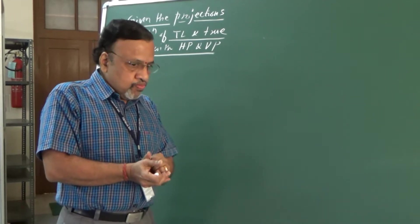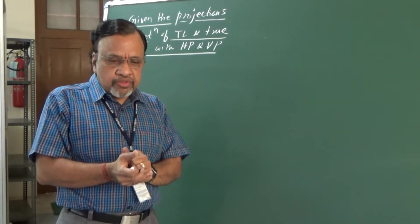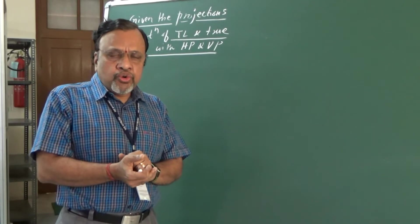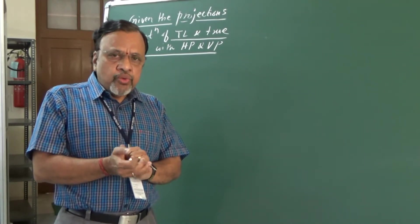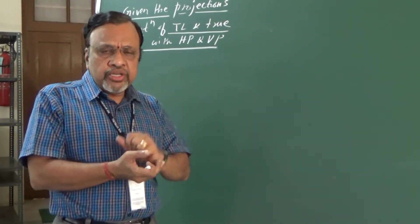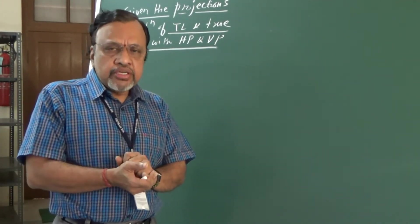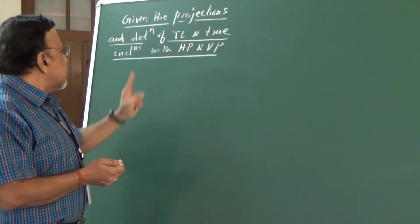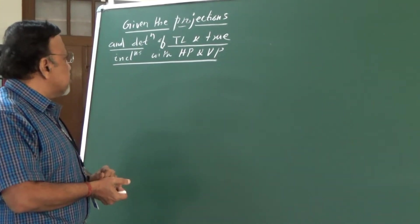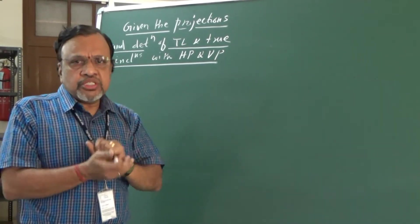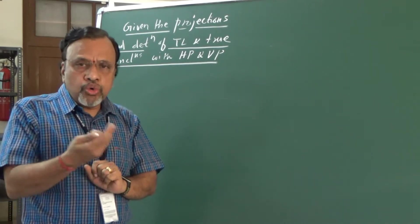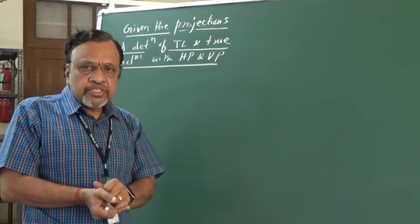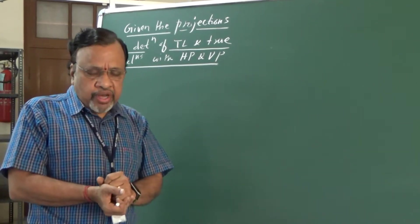Good morning. In the previous sessions I covered problems where we would have known the true length and true calculations, then found the final projections — that is, a-dash, b-dash, a, and b. Now we can also have a problem where given the projections, we need to find the true length and true inclinations with HP and VP. That's what I'm going to do in today's session.